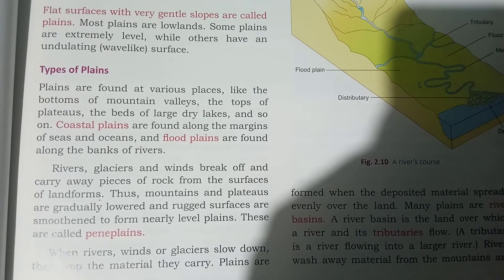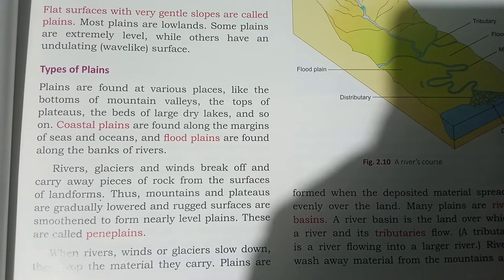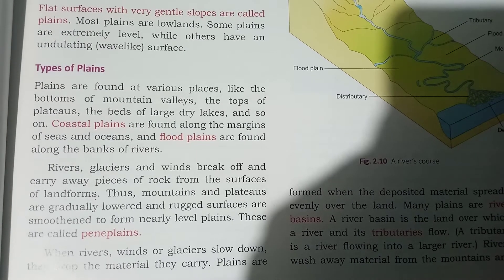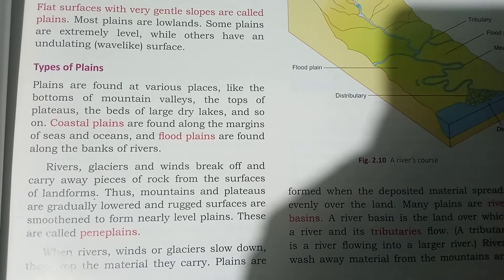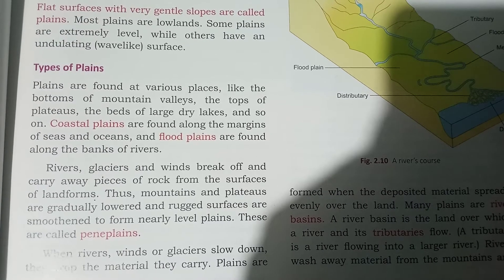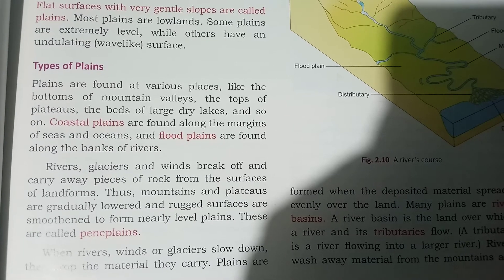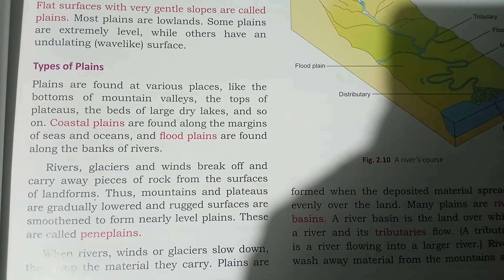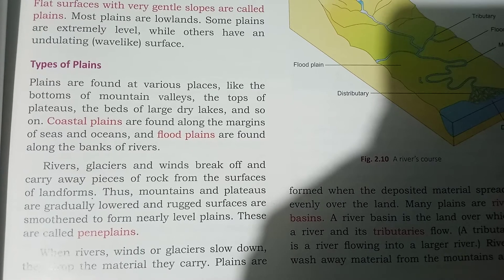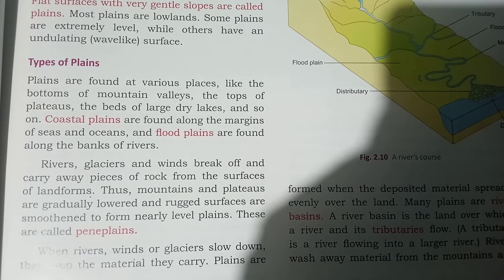So what are coastal plains? Coastal plains are found along the margins of seas and oceans. That is where we find coastal plains.